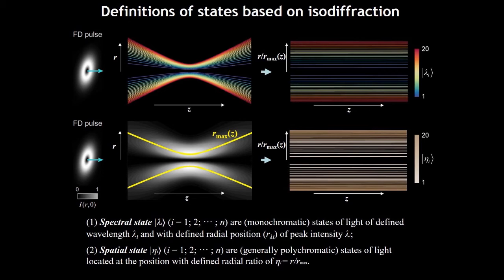And the spatial state is the total field state of light located at the position with defined radial ratio of eta. The eta is the radial ratio, the radius over the constant radius, the R max. R max is the radius of the maximum total intensity.